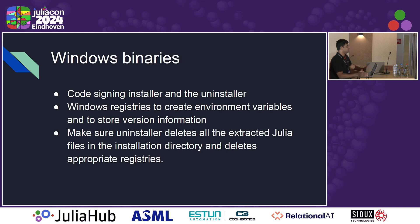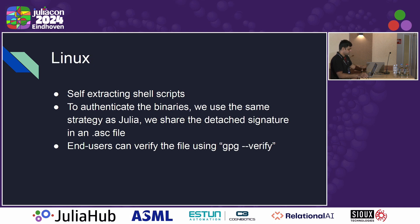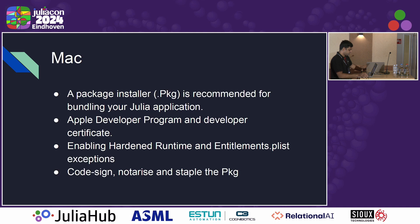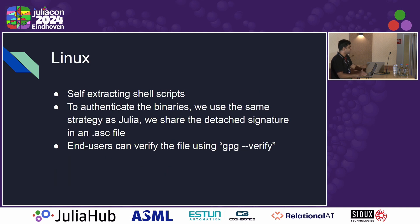Make sure you have a good uninstaller that cleans up your files, and code sign your binaries. For Linux, what we used to do is have a self-extracting shell script — your entire binary is written into a shell script. The user gets a single file, executes it, and everything gets extracted. To verify this, you can always use an ASC file; Julia uses the same approach.